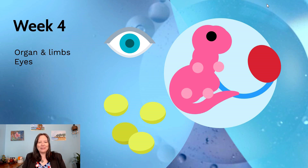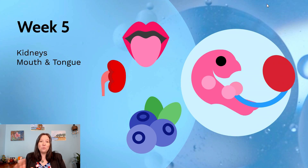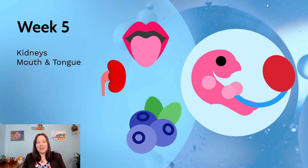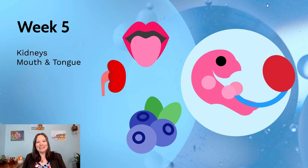At week five, our tail is starting to recede and go away. We're developing things like kidneys, and our mouth and tongue are forming — though they don't quite have the same shape we'd expect yet. We're roughly the size of a blueberry.